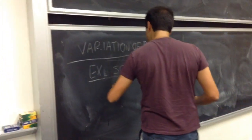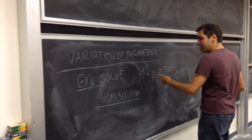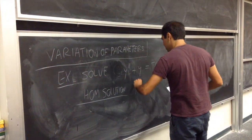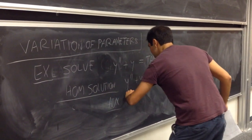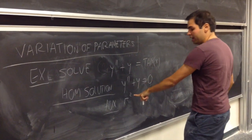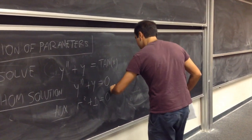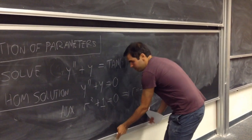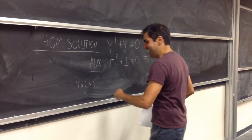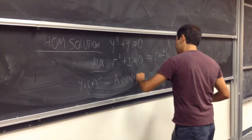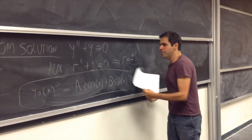Let me quickly recap how you solve this equation. You have to do two things. First, you find the homogeneous solution by setting the right-hand part equal to 0: y double prime plus y equals 0. Then you find the auxiliary equation — it's r squared plus 1 equals 0. Solving this gives r equals plus or minus i, so the homogeneous solution is y_h(x) equals a·cosine(x) plus b·sine(x).